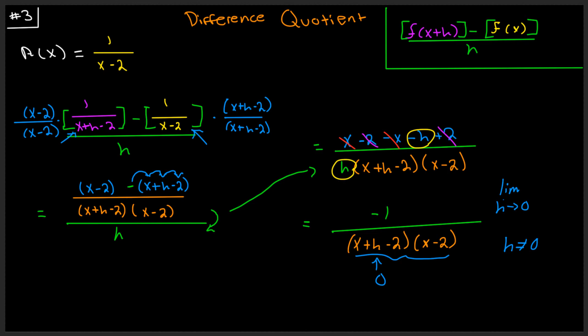So our answer will be negative one over x plus h minus two times x minus two, provided h does not equal zero. Go ahead and box that as your answer. And there you have it.